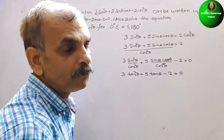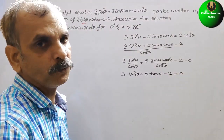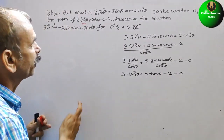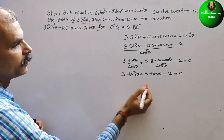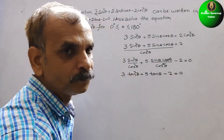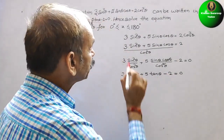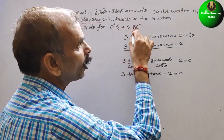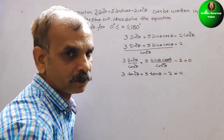So we have already proved this — the equation can indeed be written as 3tan²θ + 5tanθ - 2 = 0. Next, they have told us to solve the equation.